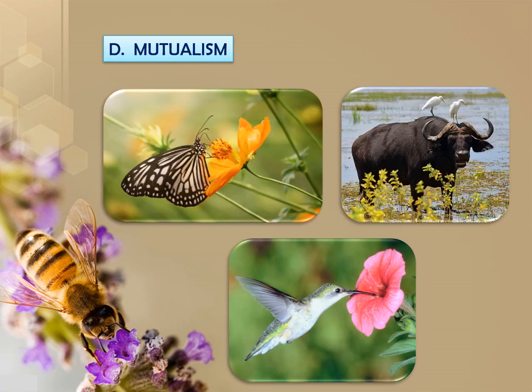Mutualism means both are benefited. You can observe the cattle egret and buffalo — the cattle egret consumes insects from the buffalo, and the buffalo gets rid of the insects. Both benefit from this interaction.